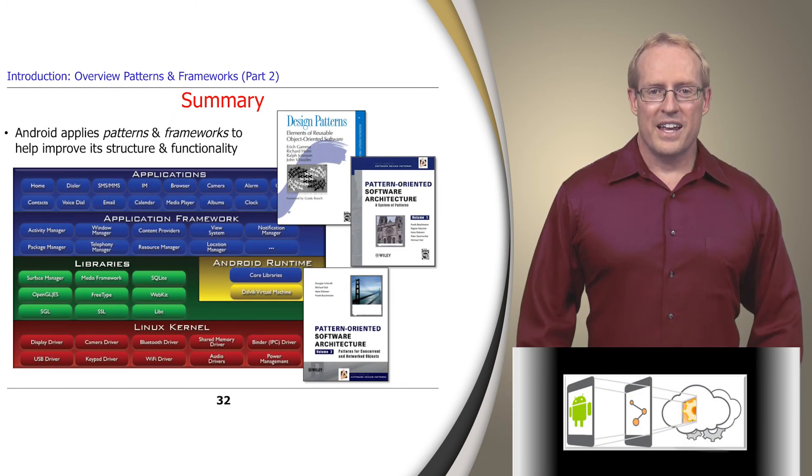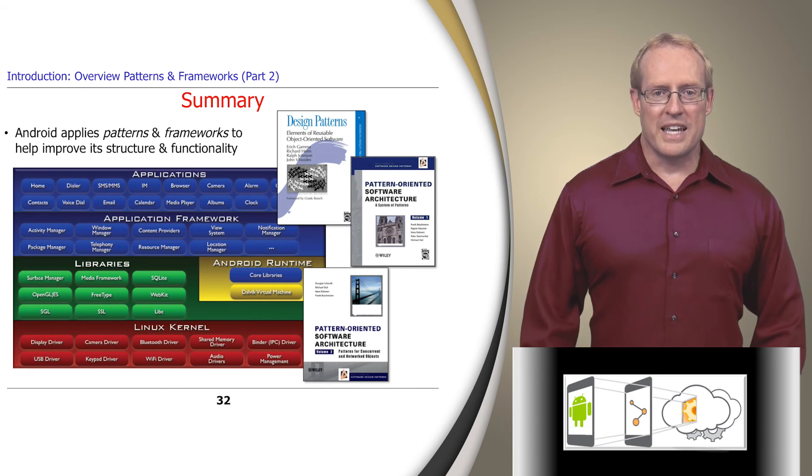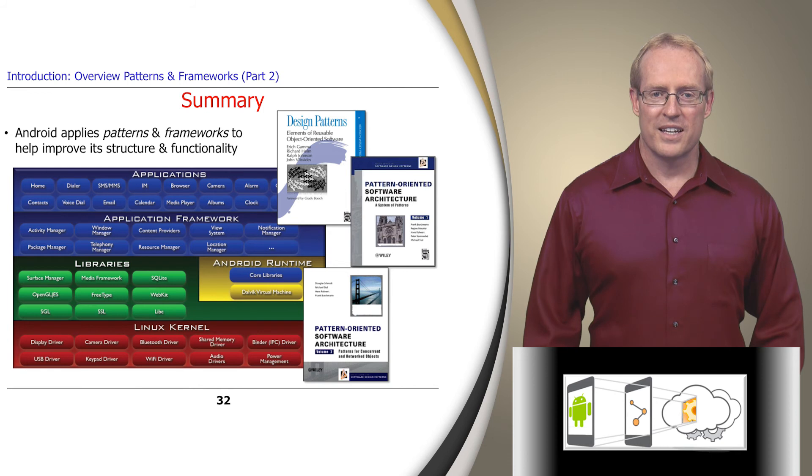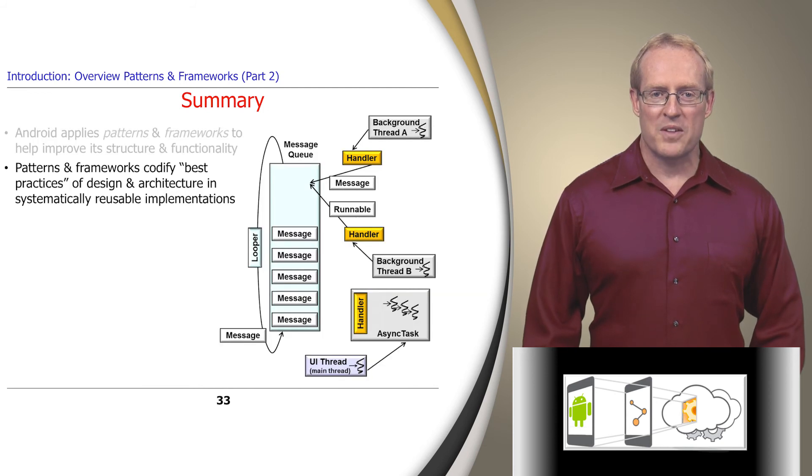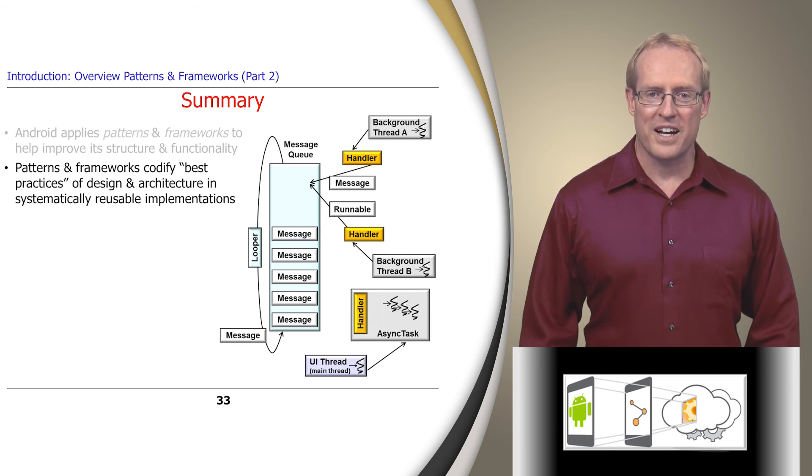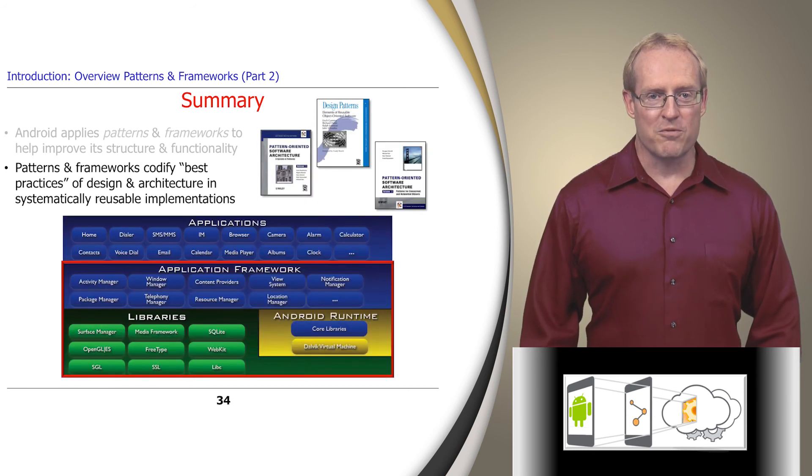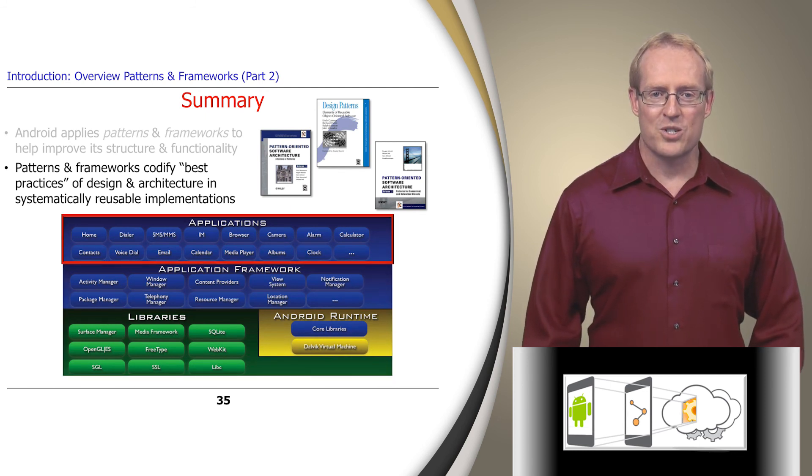In summary, Android applies many POSA and Gang of Four patterns to help improve the structure and functionality of its concurrency and communication frameworks, as well as the applications and services built using these frameworks. These techniques, tools, and methods codify software design and architecture best practices in the form of systematically reusable implementation artifacts. Some of these patterns and frameworks focus on Android's middleware layers, whereas others focus on writing applications and services.